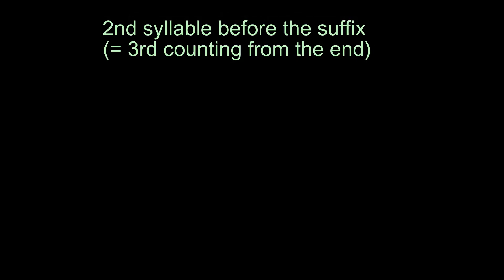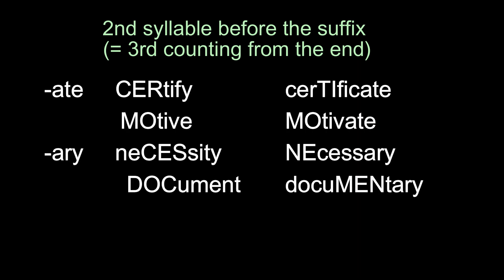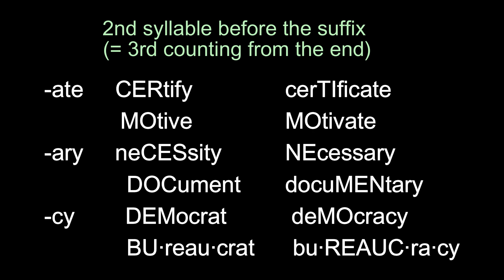Second syllable before the suffix. When the following suffixes are added to the stem, the primary stress shifts to the second syllable before the suffix — that is, stress goes to the third syllable counting from the end of the word. With suffix -ate: certify → certificate; motive → motivate. With suffix -ary: necessity → necessary; document → documentary. With suffix -cy: democrat → democracy; bureaucrat → bureaucracy.